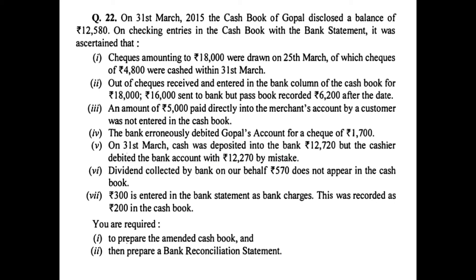Point four: the bank by mistake debited Gopal's account for a check of rupees 1,700. This is an error committed by the bank, so it will not be part of the amended cash book — it will be part of the BRS. Since the bank has deducted 1,700, the pass book shows 1,700 less than the cash book, so 1,700 will be put in the minus column of the BRS.